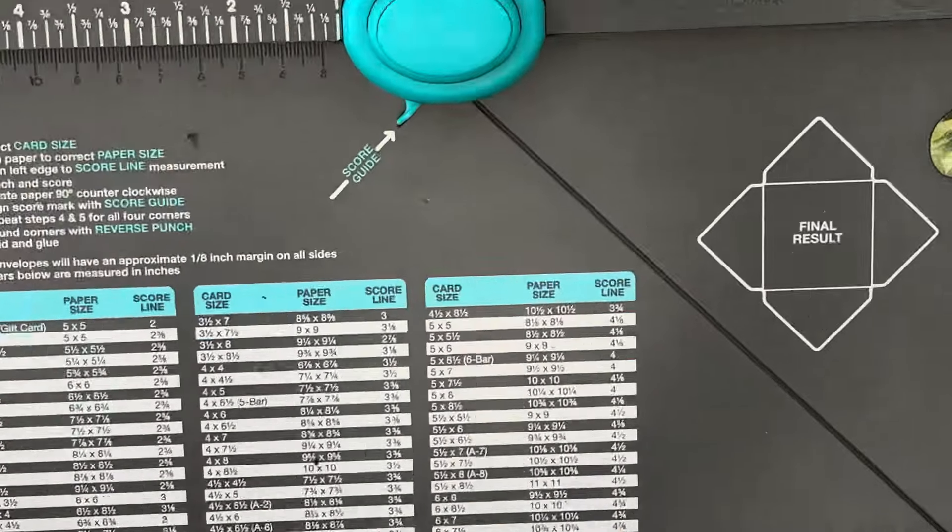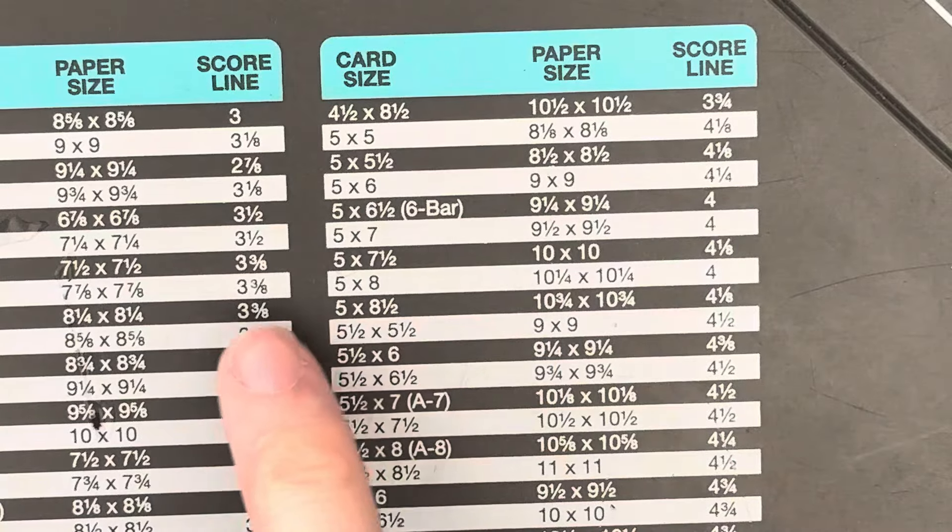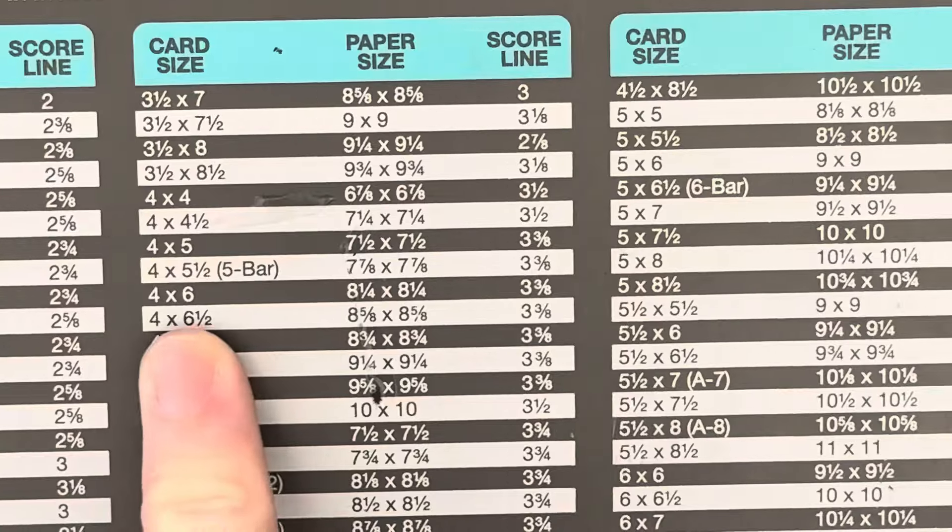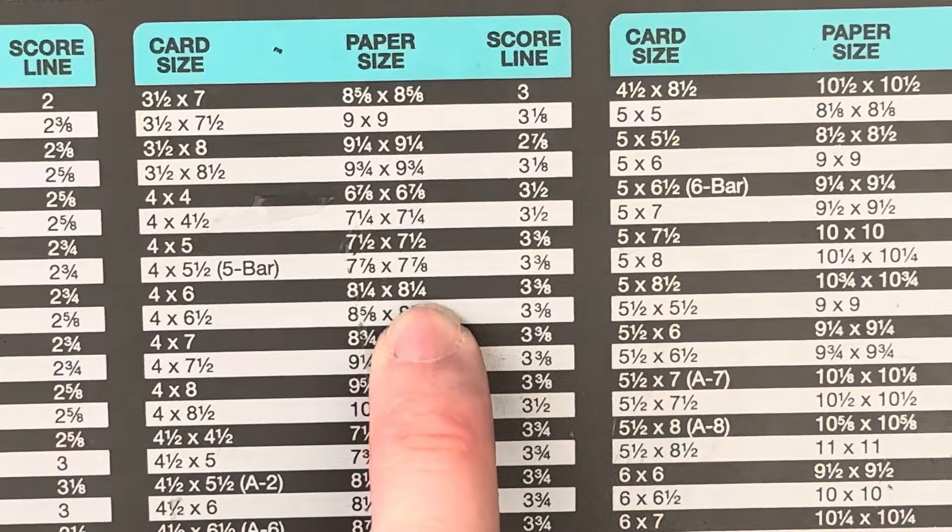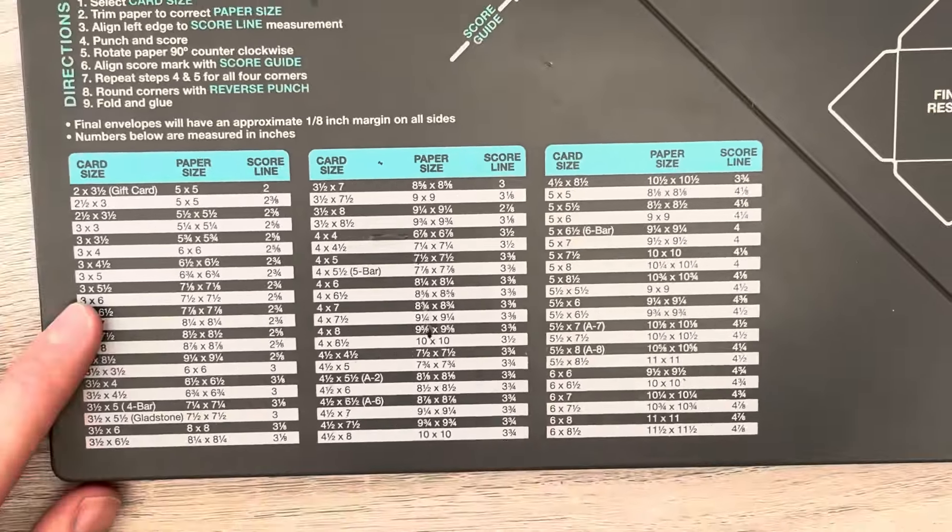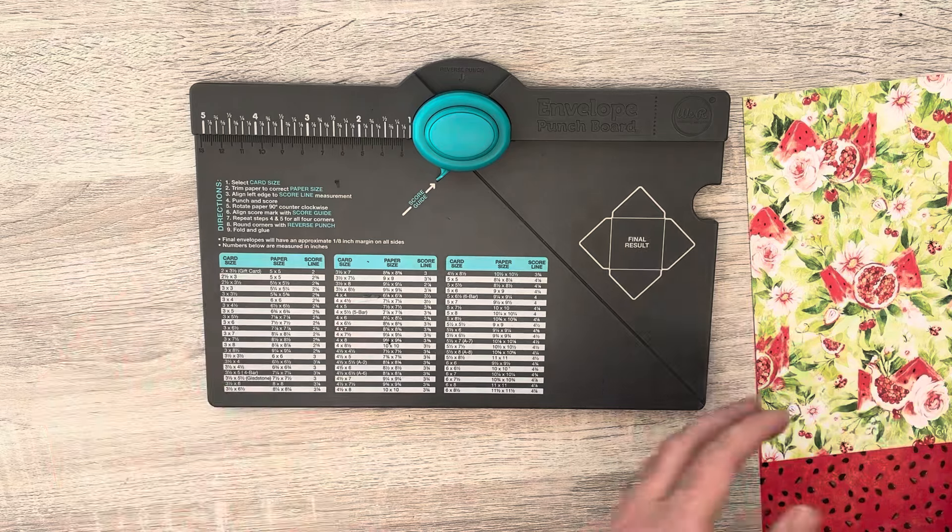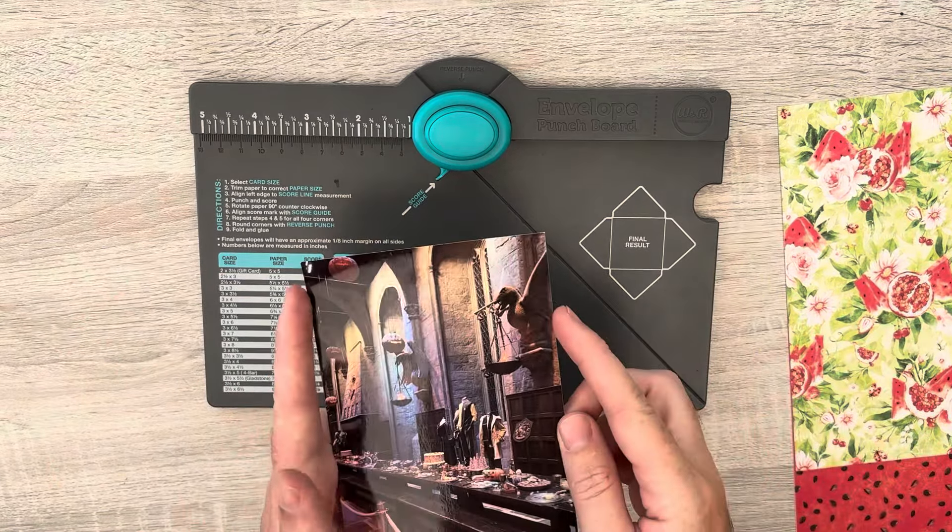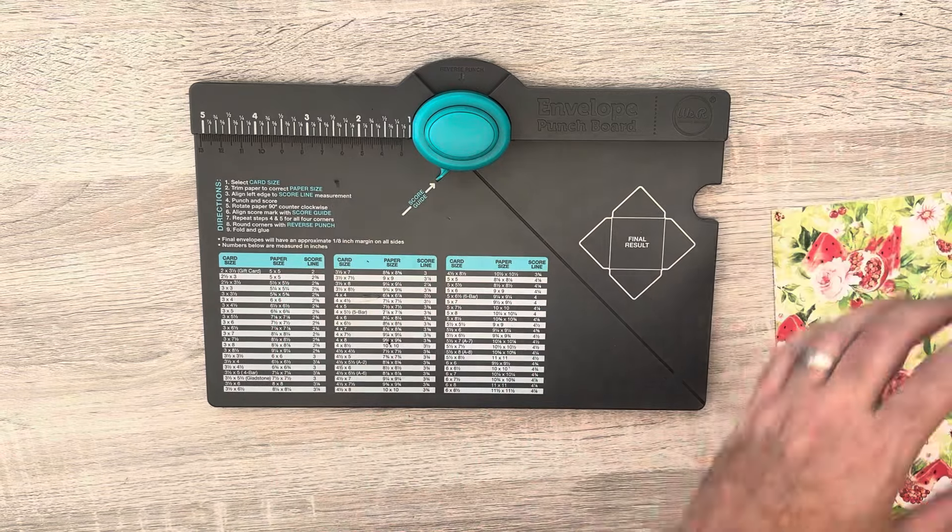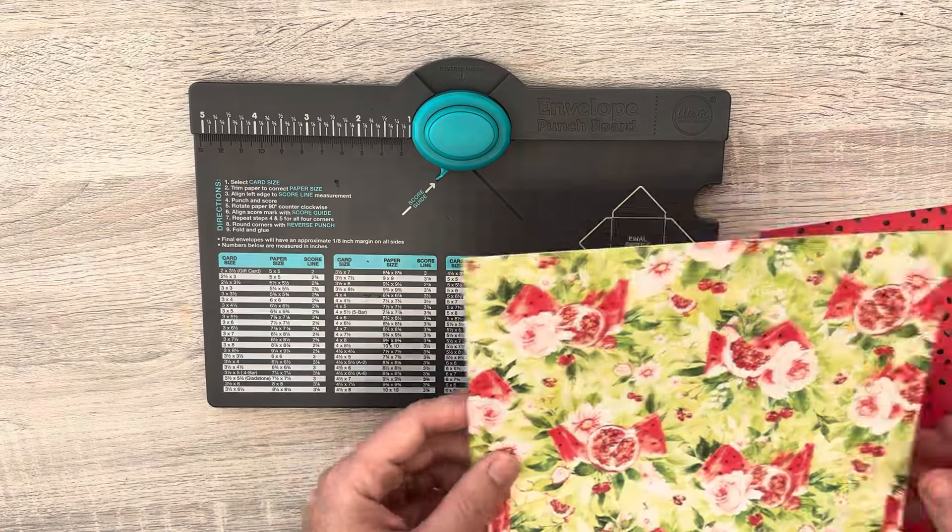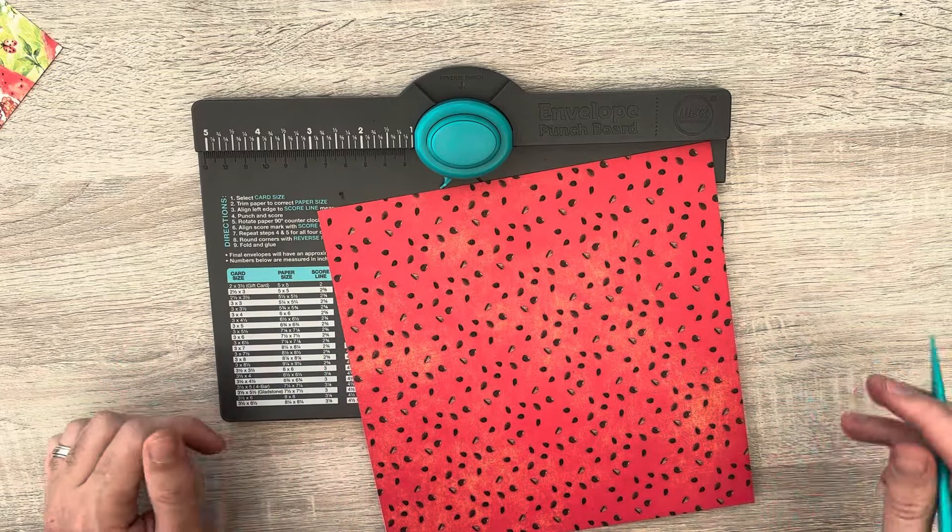So first thing I do need to do though is cut my papers down to 8x8 because with the Graphic 45 8x8 we have this name strip here. So 8 inches and 8 inches. And if we have a look at the measurements you'll see that 4x6, here we are, 4x6 we need an 8 and a quarter by 8 and a quarter. But obviously my papers are only 8 inches. But then I realized that, well actually that's designed for 6x4 card. And 6x4 photos tend to be a little bit smaller and there's no thickness like a cardstock. So I tested it out using the same measurement but with my 8x8 and it actually worked.